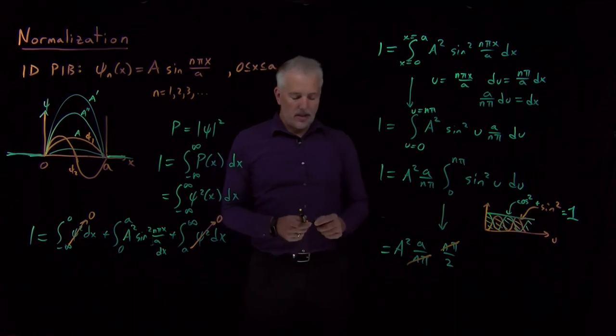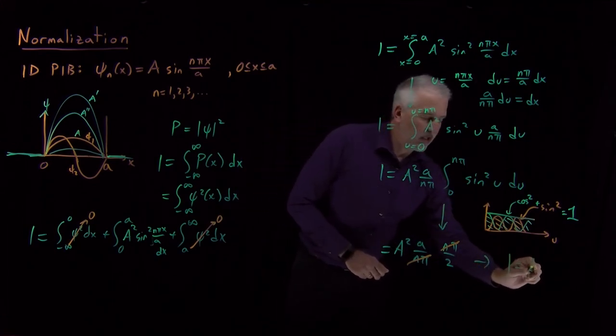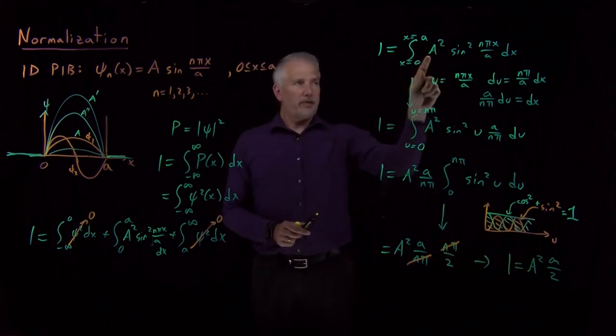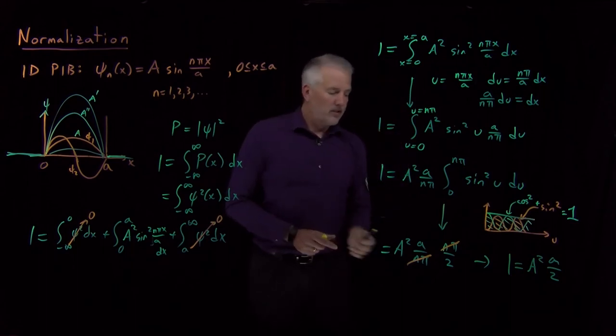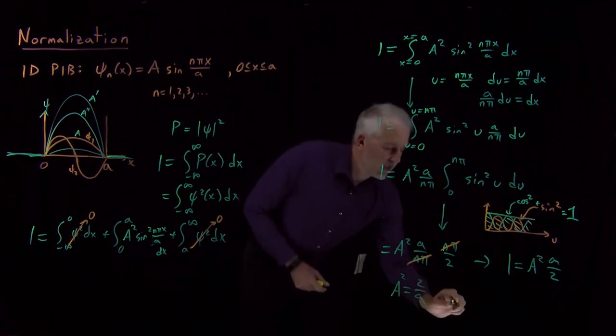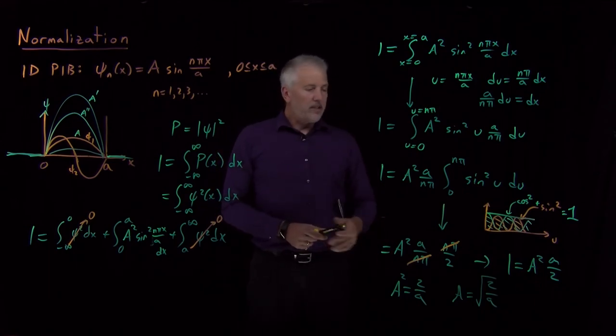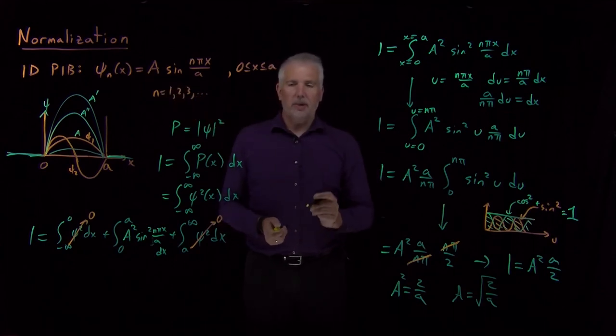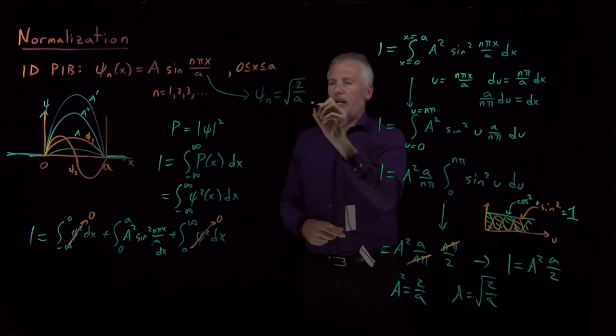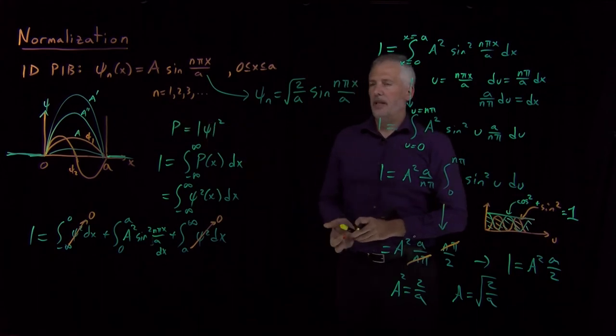There's some cancellation that happens. nπ over two, the nπ in the numerator cancels this nπ in the denominator. So we find that what we want to be true is that the one on the left side is equal to A squared times little a over two. We are solving for the value of A. Remember, we're looking for the specific value of capital A that allows this integral to be equal to one. So when I rearrange and solve for capital A, A squared is two over a. A is equal to the square root of two over a. So what that means is that the value of A that we've solved for in this wave function, our actual particle in a box wave function, we know the value of A now. It's square root of two over a times sine of nπx over a with the same requirement that this is only true inside the box and that n has to be some positive integer value.